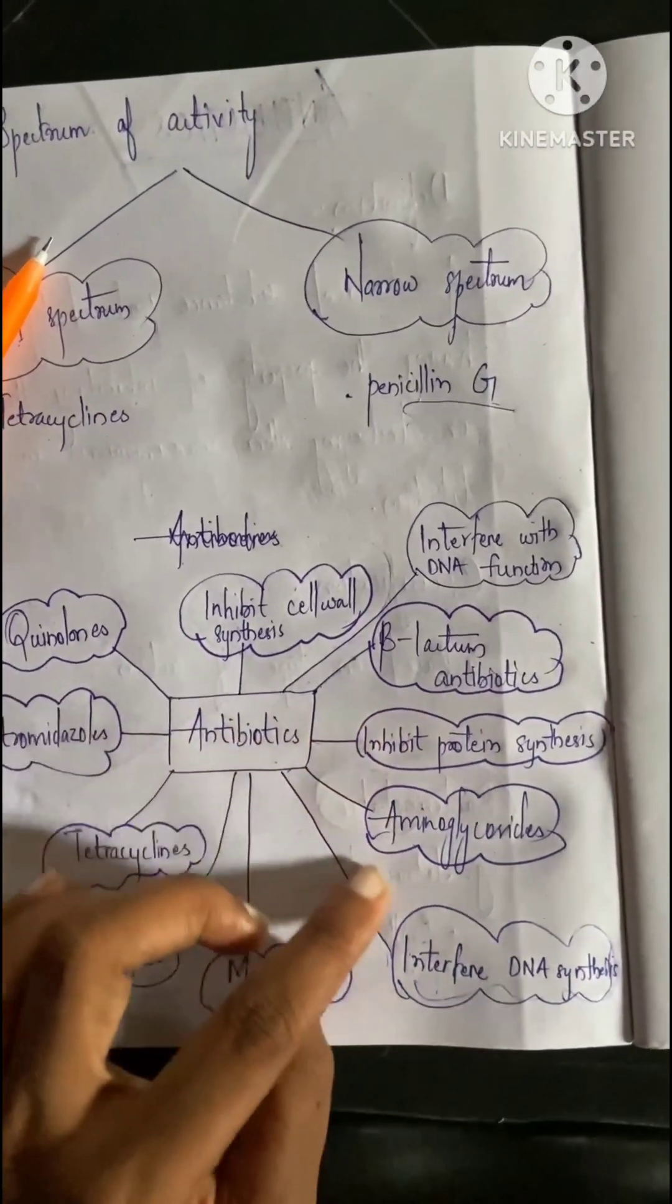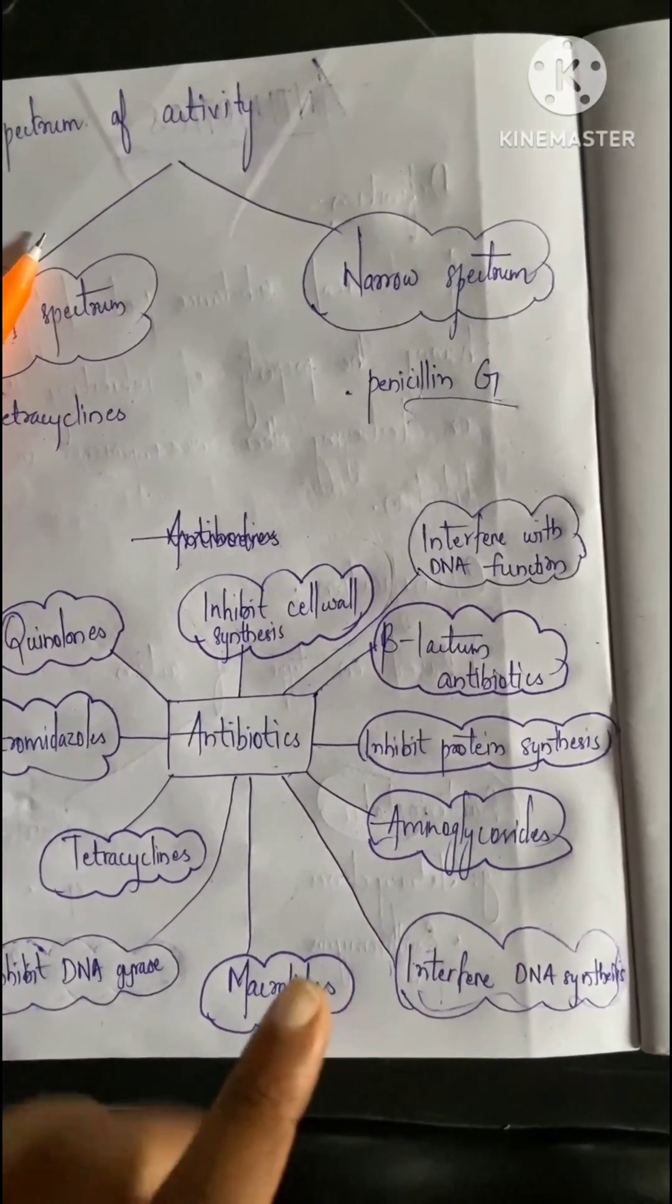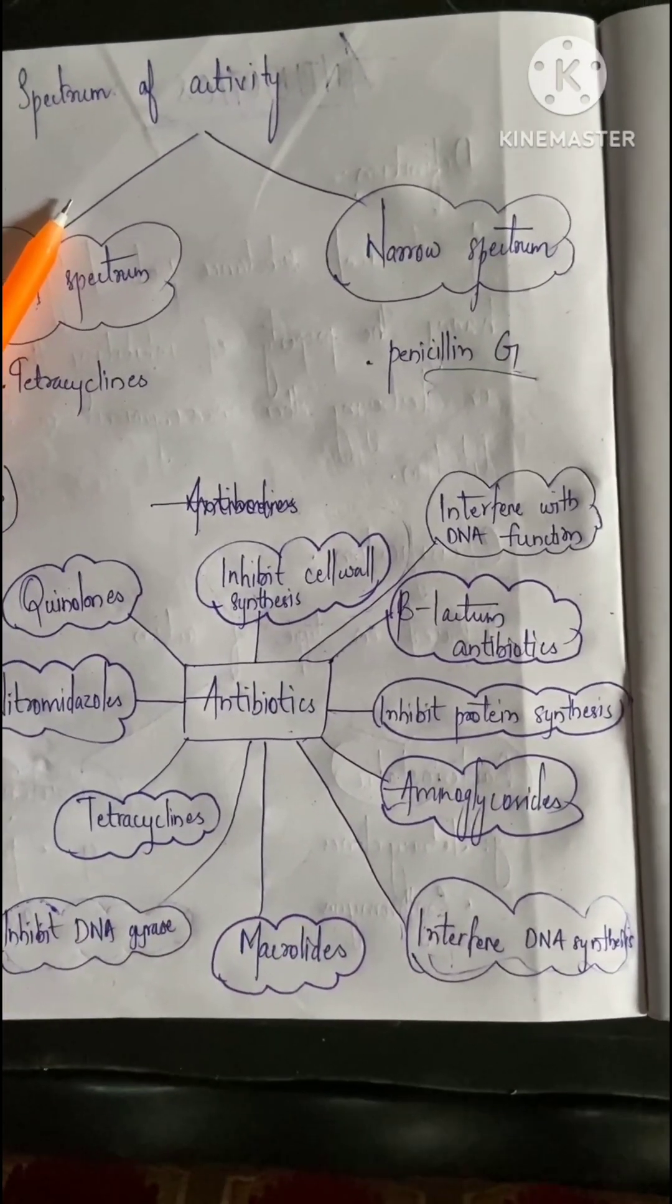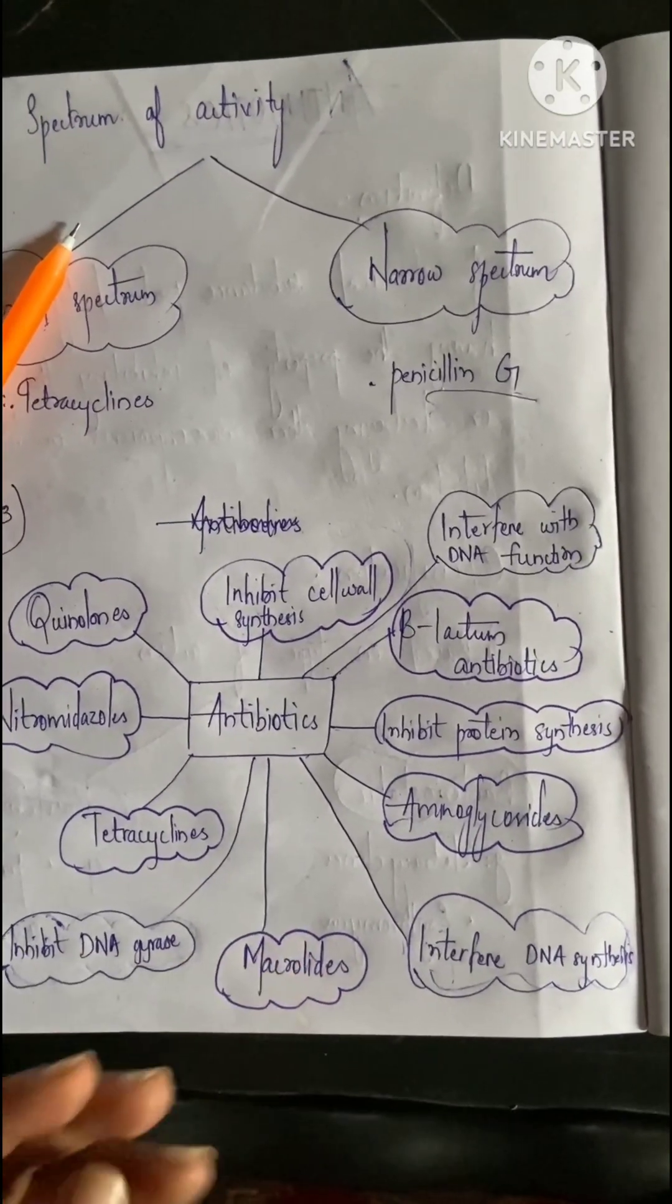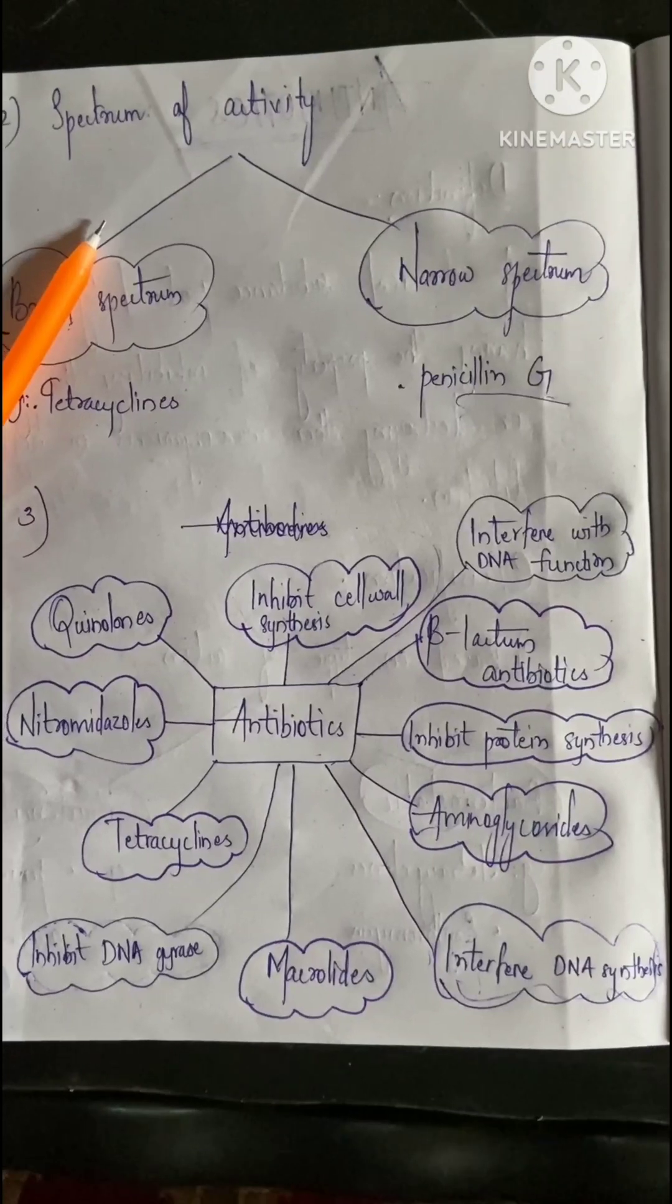Next is aminoglycosides - examples are streptomycin, gentamicin, kanamycin, and amikacin. Next is macrolides - examples are erythromycin, azithromycin, and clarithromycin. As we all know, azithromycin and erythromycin are commonly prescribed by doctors for fever or sore throat. These come under the classification of macrolides.